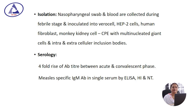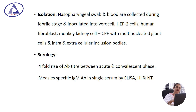Isolation or culture of measles virus: nasopharyngeal swab and blood are collected during febrile days and inoculated into cell-line culture. Examples of cell-line cultures are Vero cell, HepG2 cell, monkey kidney cell, and human fibroblast cell. In the cell-line, we observe cytopathic effect with multinucleated giant cells and both extracellular and intracellular inclusion bodies.